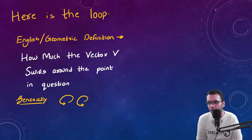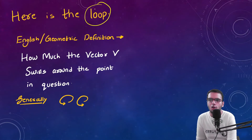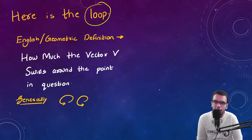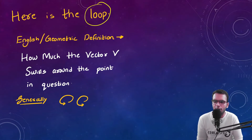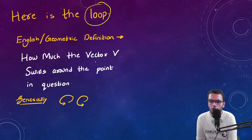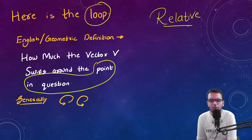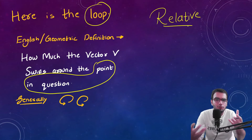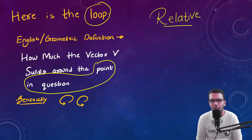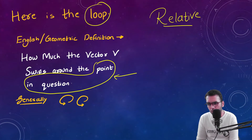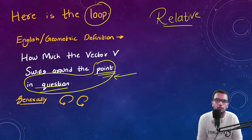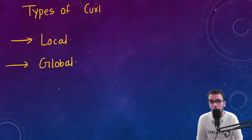So the mathematics was right, the vector model was right — something was wrong with my understanding. Finally I got help from one article which says the key lies in the last part of the definition: 'around the point in question.' This means curl is not absolute — curl is relative. Curl depends upon what is being asked in the question. It is a relative concept. So I got to know there are two types of curl.